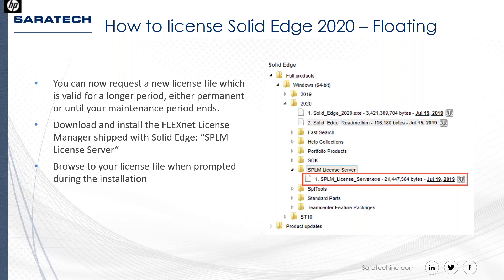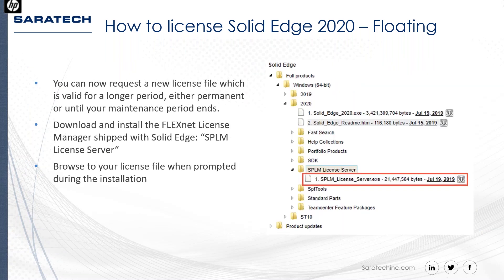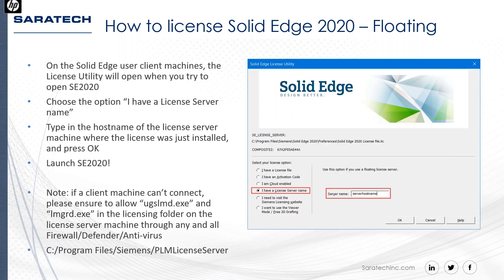Once you've submitted that information, you can download your new permanent license file. On the download page, under Full Products > Solid Edge Windows 2020, there's a license server option. The download is called 'SPLM License Server' — that's the installation for the license manager. Run it, and one of the pages will prompt you for your downloaded license file. Once that's done, the licensing is good to go, and you can install Solid Edge on the client machines.